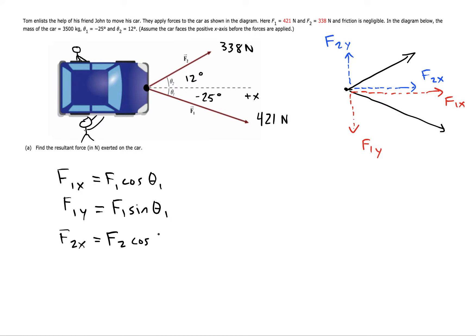Let's plug in. F1 was 421, so we'll do cosine of negative 25 degrees. Here we'll have 421 sine negative 25 degrees. For F2 the magnitude is 338, so you want to plug that in.